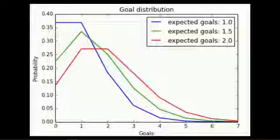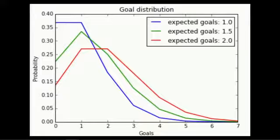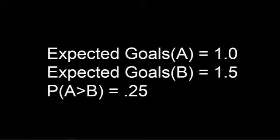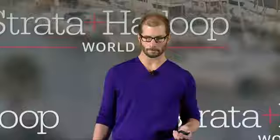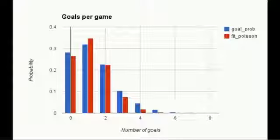So how does this work for soccer? Each team in a game will essentially have an expected goal statistic — sometimes they'll score more than that, sometimes less. A side effect of this is that the best team doesn't always win. If we have a team with 1.0 expected goals and another with 1.5 expected goals, the first team will win almost a quarter of the time. Here's how closely the data fits to the Poisson distribution — and with more data, some other analyses show the fit is even closer.